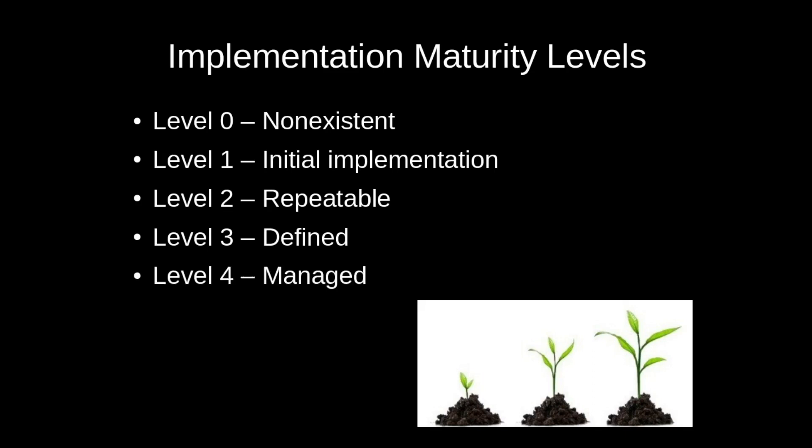Once you have those, you move into a managed implementation at level four. Managed implementations are focused on key performance indicators — this is where you begin to measure and analyze each phase of the framework. You use that information to move into level five, an optimized implementation, where you use your KPIs from level four to inform your strategy and move forward in an efficient and effective manner.